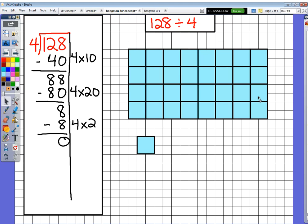Let's see if that makes sense over in my hangman problem. If I add up, here were 10 4's, 20 4's, and 2 4's, right? 10, 20, and 2. Add it all together, and sure enough, that makes 32. So that means that 128 divided by 4 is 32.